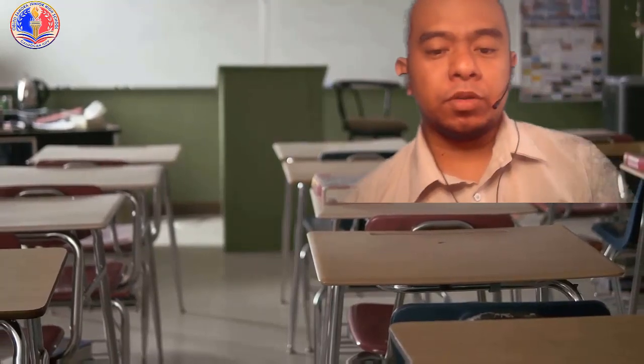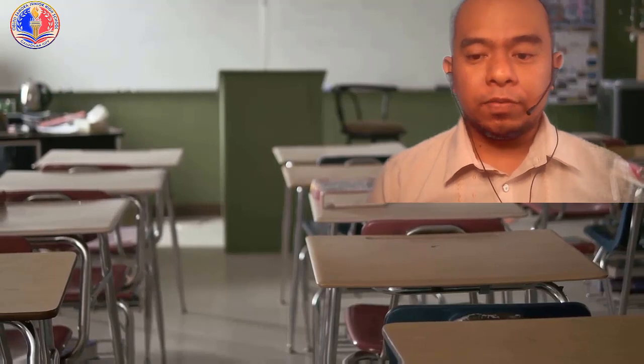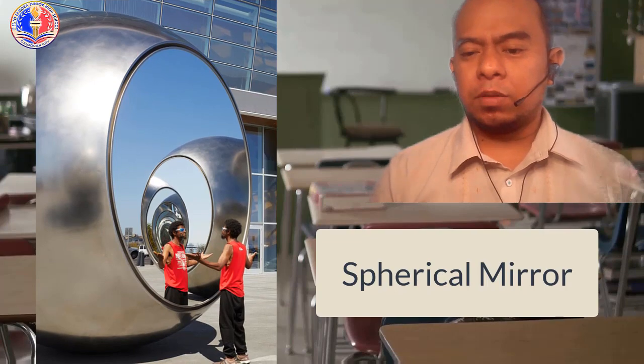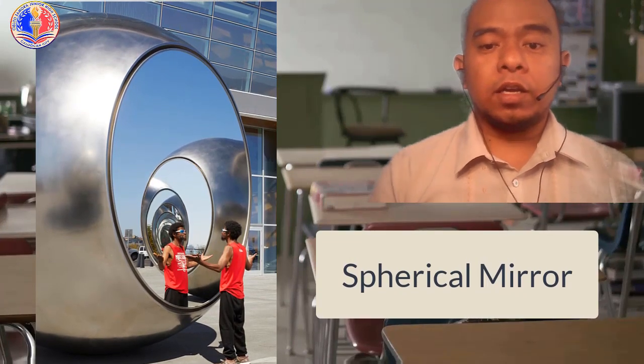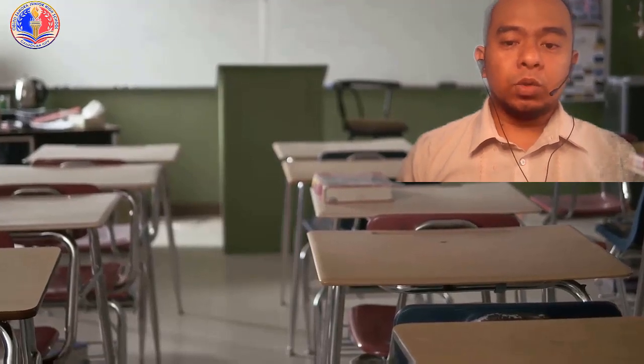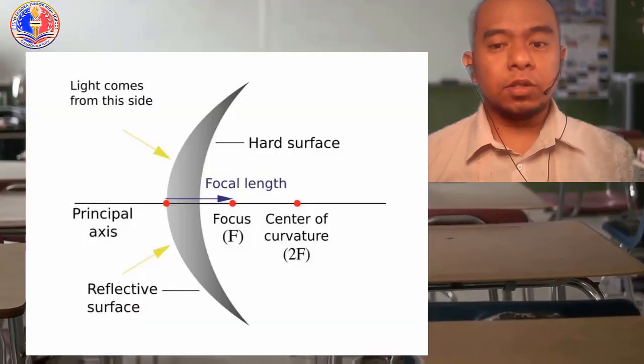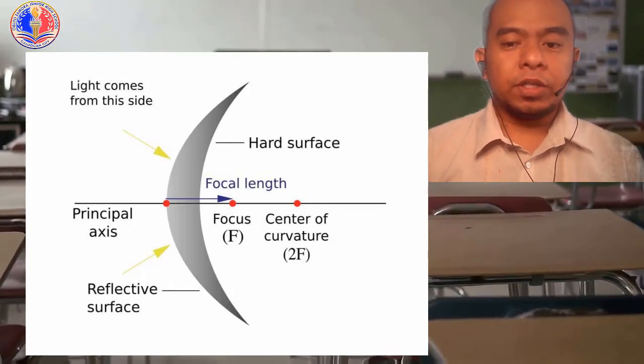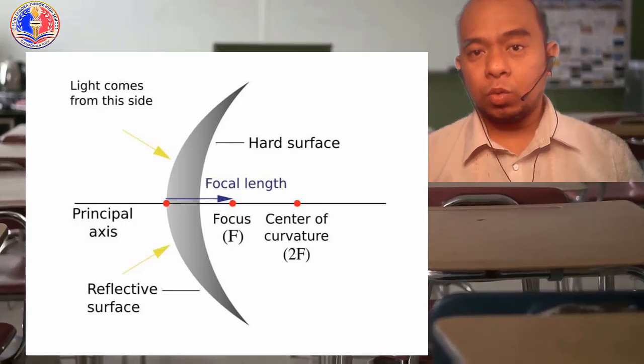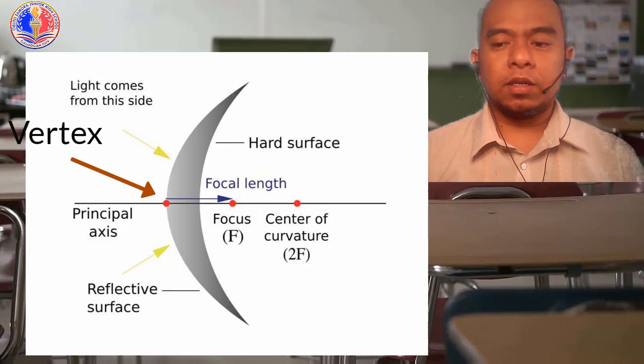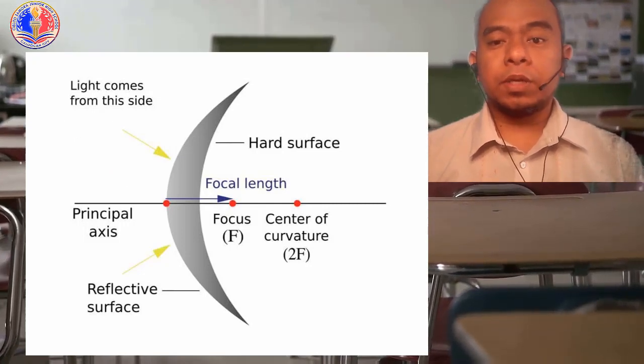The second type of mirrors are spherical mirrors. They have a reflecting surface taken from the surface of a sphere. It may be concave or convex. Terminologies on spherical mirrors include: Number one, center of curvature. It is the center of the sphere from where the mirror was taken. Number two, the vertex. It is the center of the mirror, sometimes called the pole of the mirror.